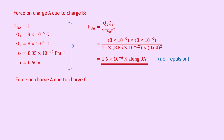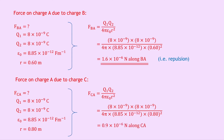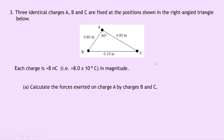Doing the same for the force on charge A due to charge C, FCA: Q1 and Q2 are both 8 times 10 to the minus 9 coulombs, epsilon naught is 8.85 times 10 to the minus 12 farads per metre, and the distance R is 0.8 metres between charges A and C. Writing FCA equals Q1Q2 over 4 pi epsilon naught R squared and substituting in gives 8 times 10 to the minus 9 times 8 times 10 to the minus 9 divided by 4 pi times 8.85 times 10 to the minus 12 times 0.8 squared, giving 0.9 times 10 to the minus 6 newtons along CA — again repulsion, so A is pushed away from charge C.